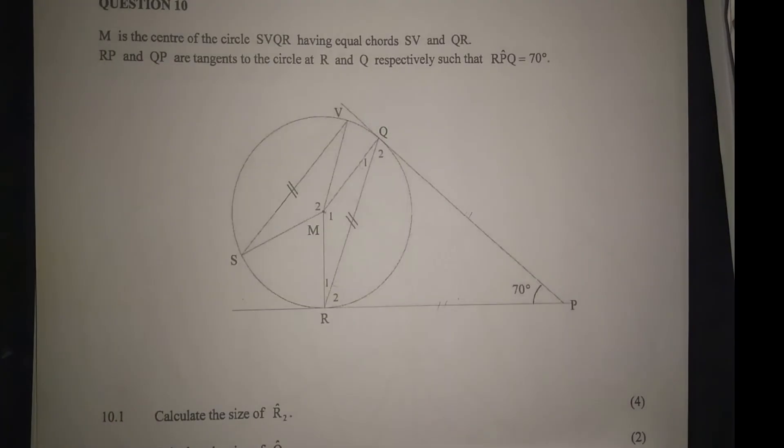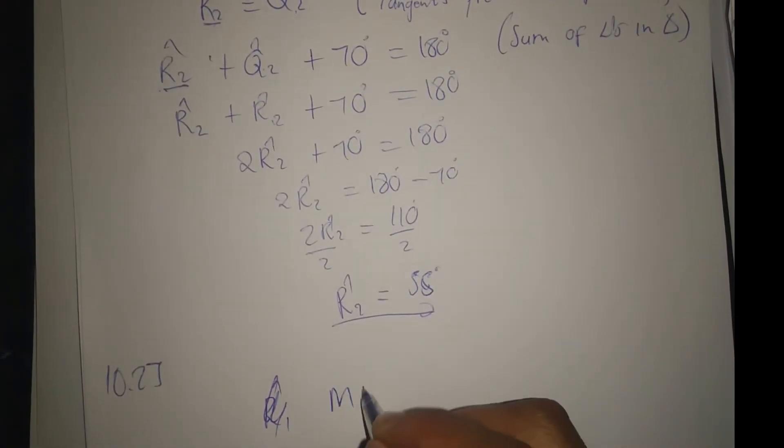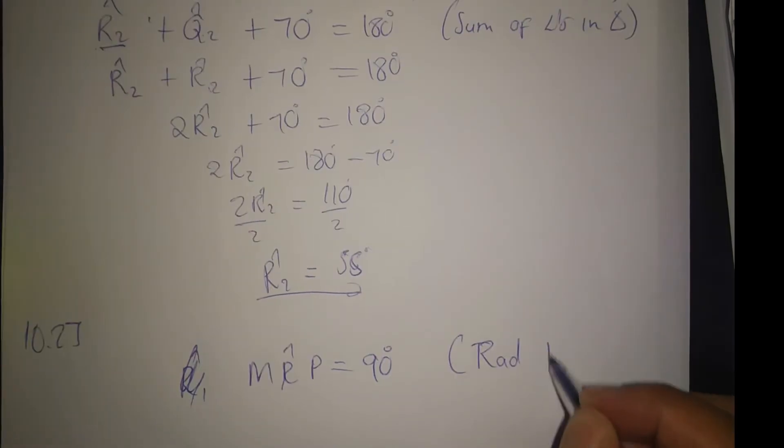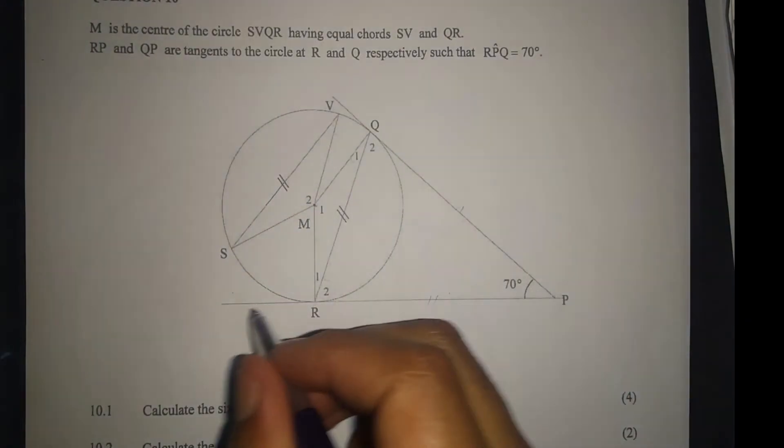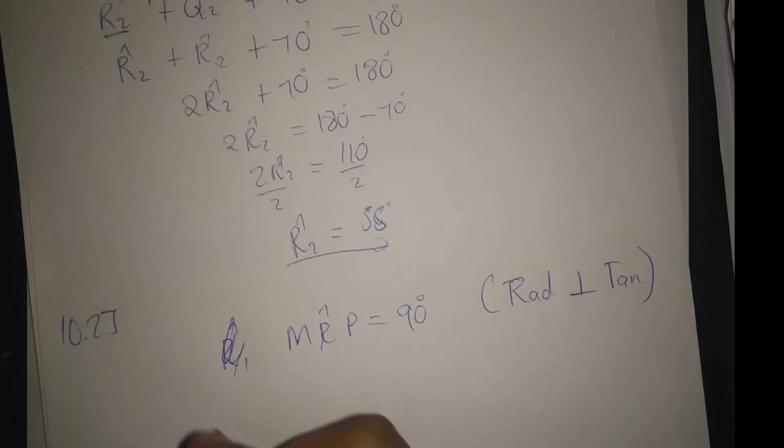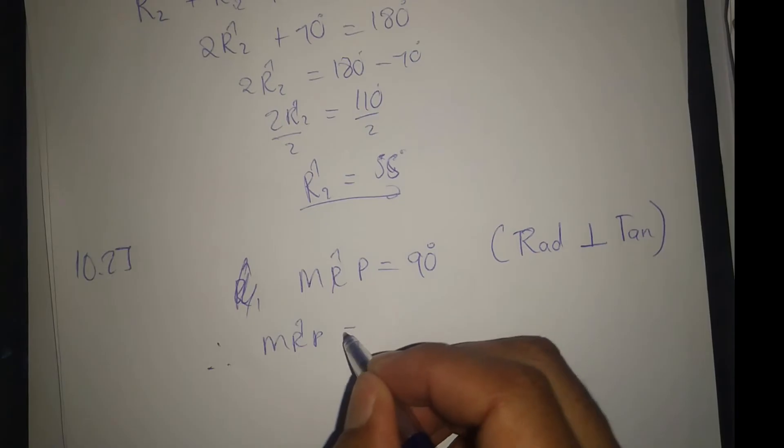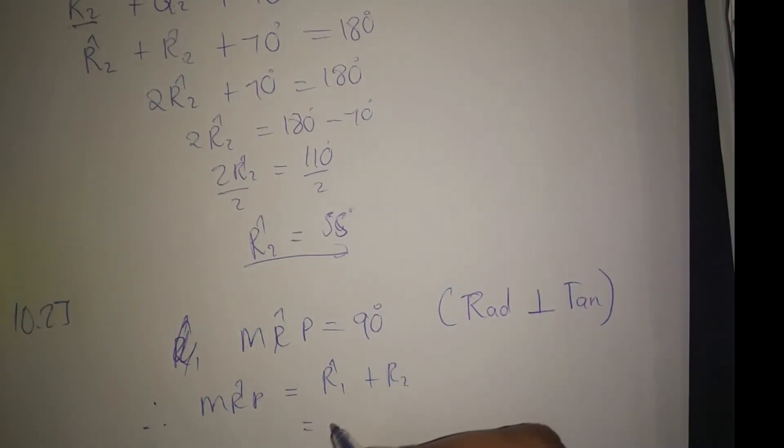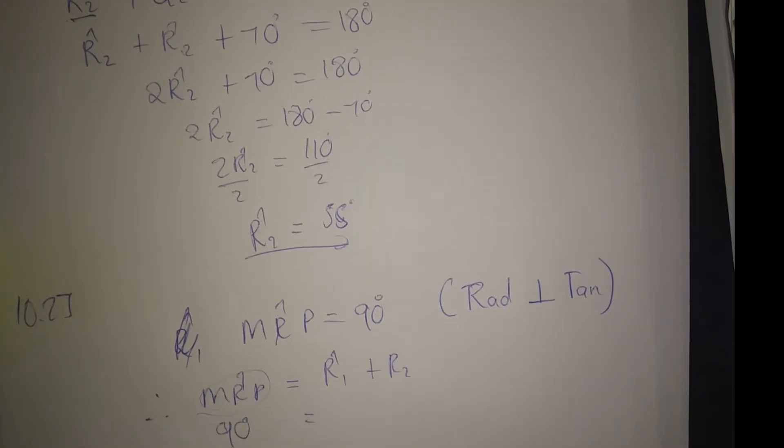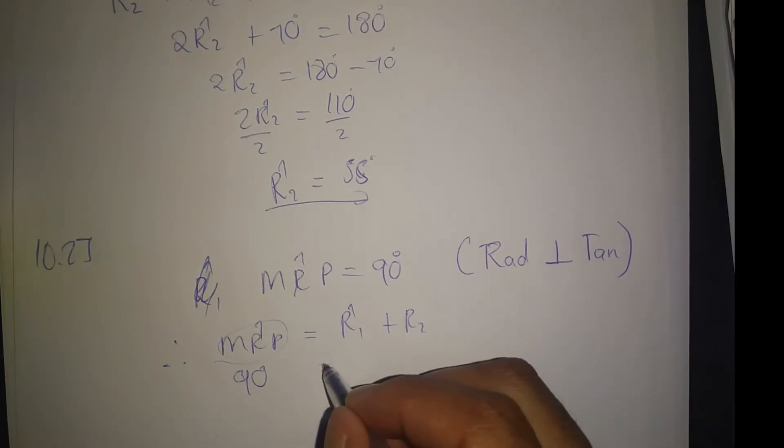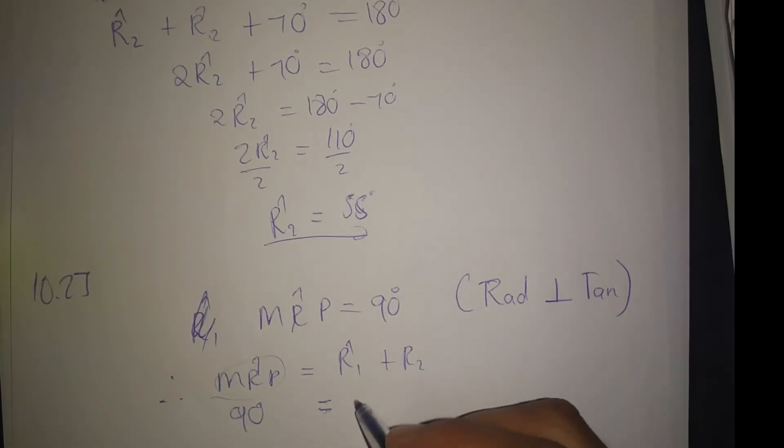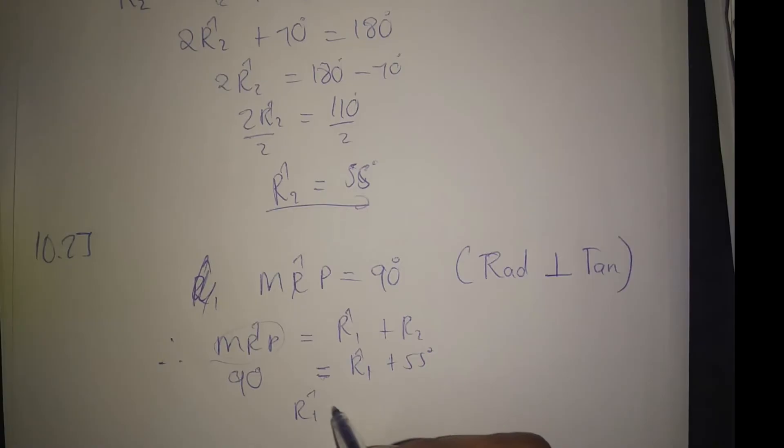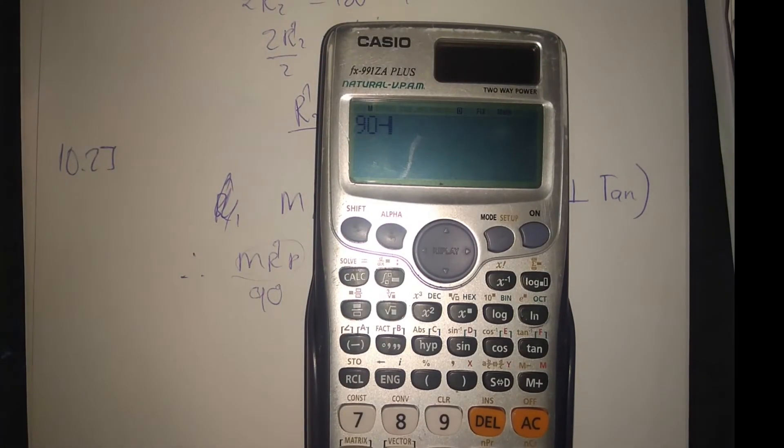Angle MRP is equal to 90 degrees because the radius is perpendicular to a tangent. This radius is perpendicular to this tangent, so it's 90 degrees. It means MRP is equal to R1 plus R2. R2 is 55, MRP is 90 degrees. So R1 is equal to 90 degrees minus 55, which is 35 degrees.